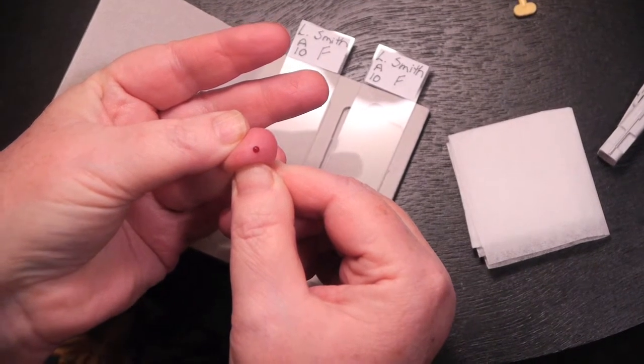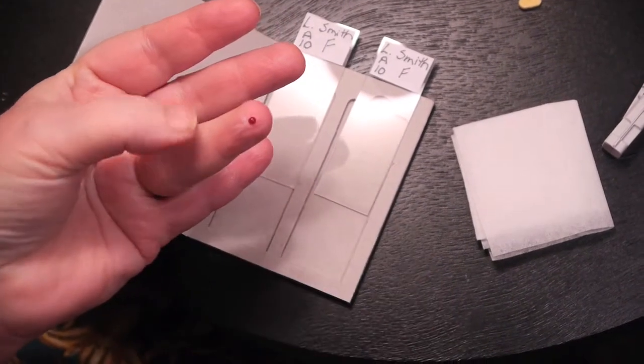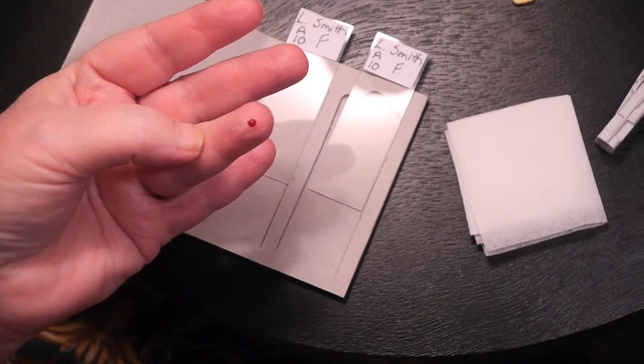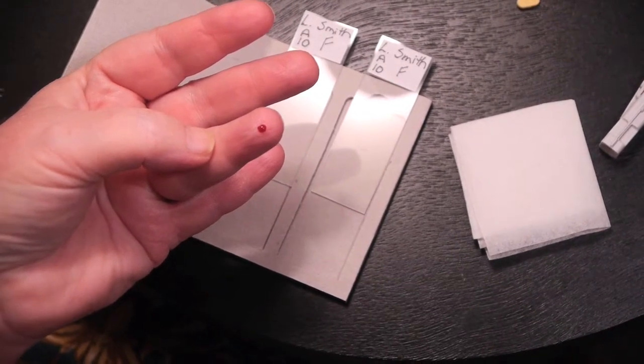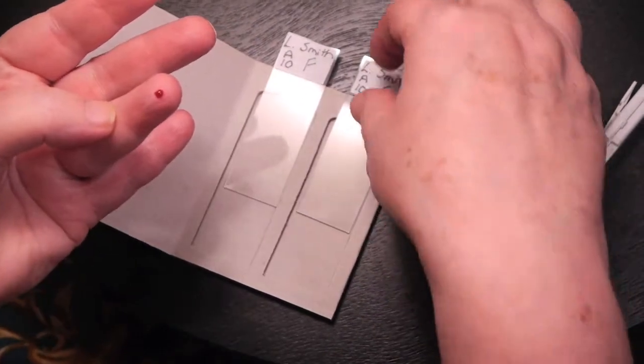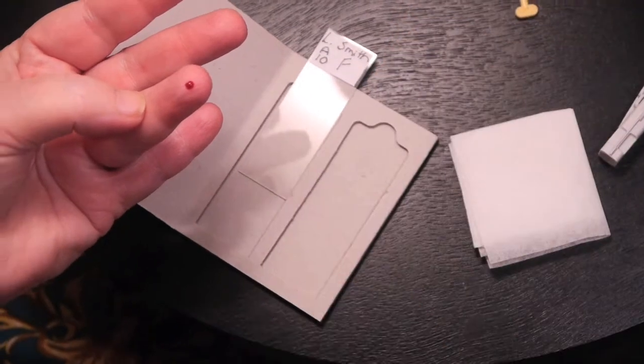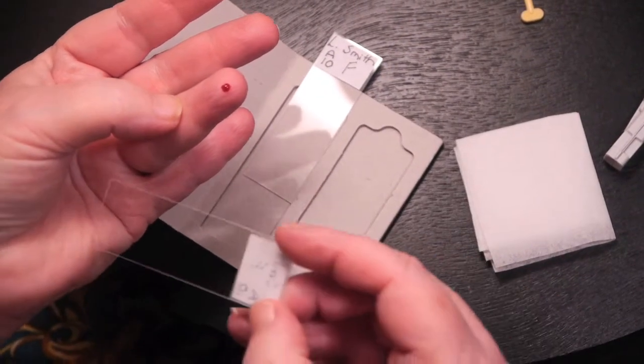Wait for the blood drop to stabilize on your finger. You don't want a bunch of blood coming out. If your blood is not stabilizing, first wipe away what comes out and then wait for a solid little bubble to form on your finger.